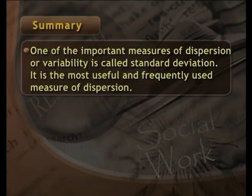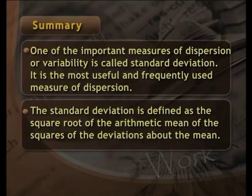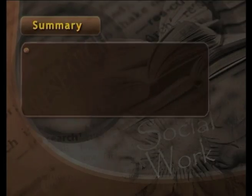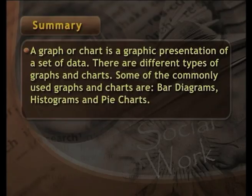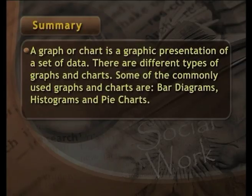One of the important measures of dispersion or variability is called standard deviation. It is the most useful and frequently used measure of dispersion, defined as the square root of the arithmetic mean of the squares of the deviations about the mean. A graph or chart is a graphic presentation of a set of data. Some of the commonly used graphs and charts are bar diagrams, histograms, and pie charts.